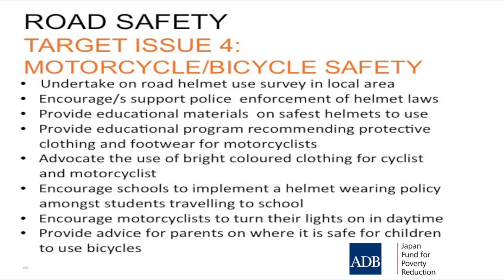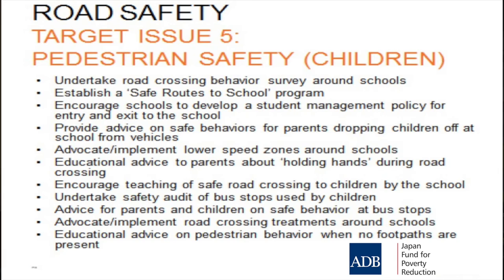For motorcycle and bicycle safety, you can have police enforcement. For pedestrian safety, you can undertake road-crossing behaviour surveys, establish a safe routes to school program, and provide advice on safe behaviours to parents — who create most of the safety risk when travelling with their children to school. You can advocate and implement lower speed zones around schools, encourage the teaching of safe crossing in schools, and encourage parents to supervise their children — just holding their hand is the most important thing. These are measures that can be taken at the local community level.